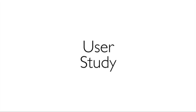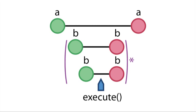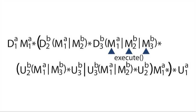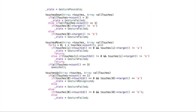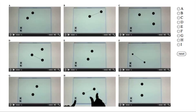We conducted a user study to investigate how quickly developers could recognize gestures using Proton++ tablatures and expressions. In our first task, we showed participants a gesture description, either in tablature, a regular expression, or as iOS event handling pseudocode. Then, we asked them to identify which video of a gesture would match that description.